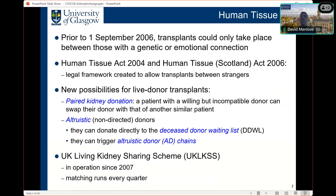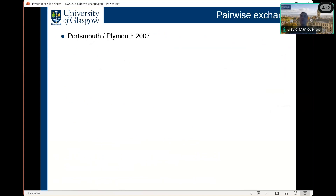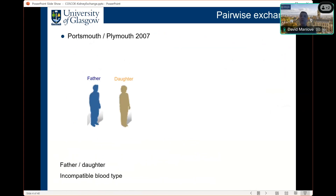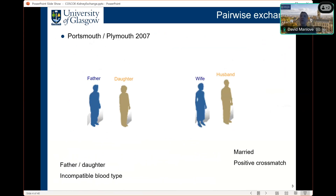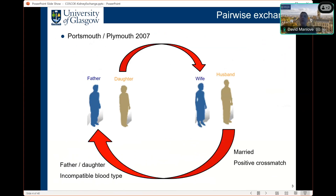One of the UK's first pairwise exchanges involved a Plymouth and Portsmouth couple in 2007. In Plymouth, a father required a kidney and his daughter was a willing donor but they had an incompatible blood type. In Portsmouth, a husband and wife pair found that the wife required a kidney and her husband was a willing donor, but they had a positive cross match. In a pairwise kidney exchange, the daughter donated one of her kidneys to the wife, in exchange for the husband donating one of his kidneys to the father. Both recipients received a kidney, albeit not from their original intending donor, and neither couple had met one another previously.